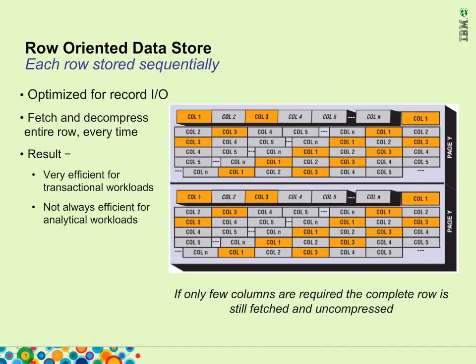In traditional second-generation DBMS, we use a row store approach where each row is stored completely. Multiple rows are stored sequentially in I/O-optimized data structures. If only few columns are required in the project list, the complete row needs to be fetched and uncompressed.